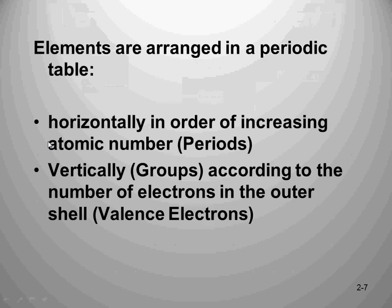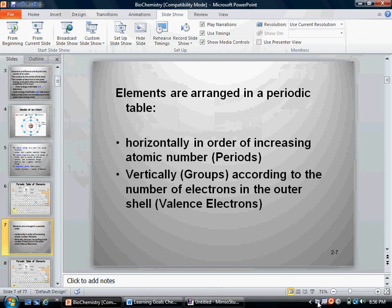Going back to the graphic: elements in the periodic table are arranged in horizontal rows called periods, which tell you how many energy shells there are. Vertically, elements are listed in groups according to the number of electrons in the outermost shell — the valence electrons. That's all there is for this section.